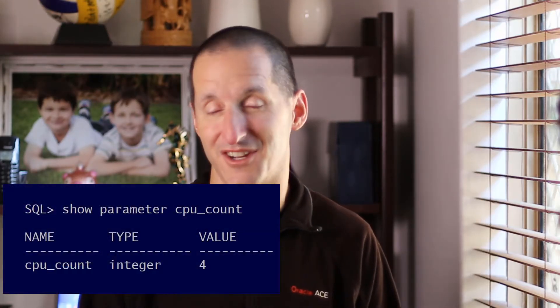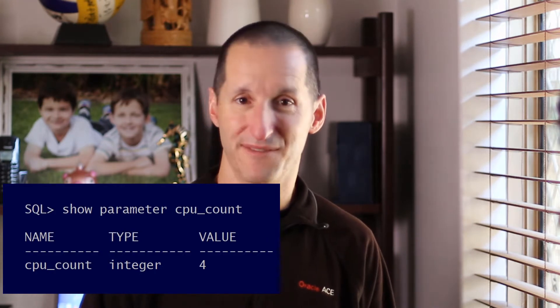Let's talk about CPU count. That's the init.ora parameter if you're a dinosaur like me, or the spFile parameter if you're a more modern DBA. The question is why is it set to what it is and should I be setting it myself? You might for example see that the number of physical cores on your box is only say 16, yet CPU count might come out as 32. To understand why that might be the case, check the previous video I've done on sockets, cores and CPUs — I'll put a link up there or in the description below so you can understand what we mean by CPU in the Oracle instance.